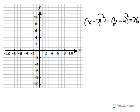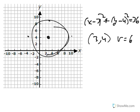So to graph x minus 3 squared plus y minus 4 squared, 3 comma 4 would be the center and the radius would be 6. And then I'll just go 6 up, 6 left, 6 right, 6 down, and make the circle.